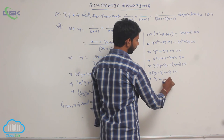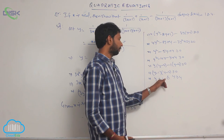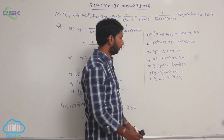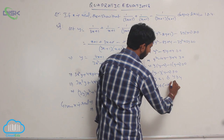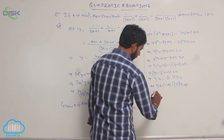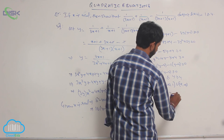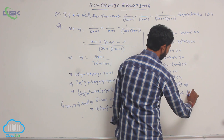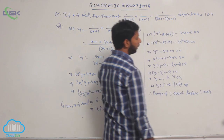This implies y ≤ 1 or y ≥ 4. The value of y is less than or equal to 1 or greater than or equal to 4. Therefore, y does not belong to (1, 4), meaning y belongs to (-∞, 1] ∪ [4, +∞). Therefore, the range of y does not lie between 1 and 4.